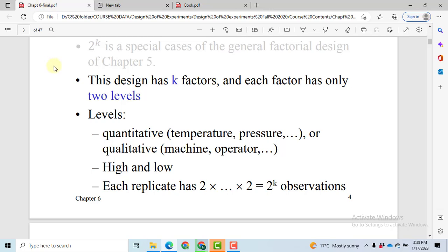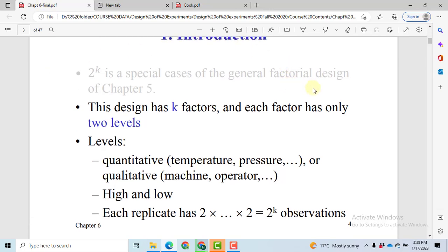2^k factorial is a special case of the general full factorial design that we have studied in chapter 5. This design has k number of factors, for example 2, 3, 4, 5, 6, and each factor has only two levels.